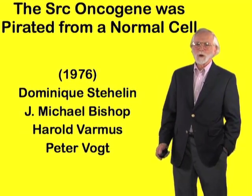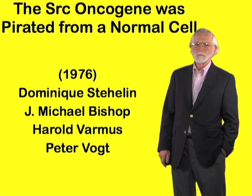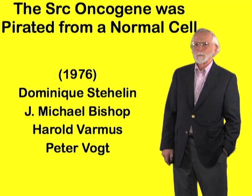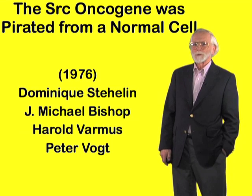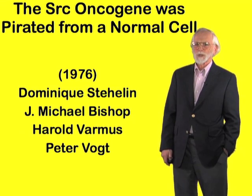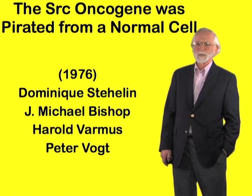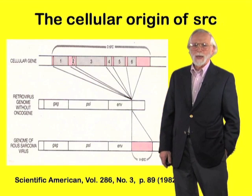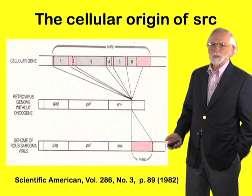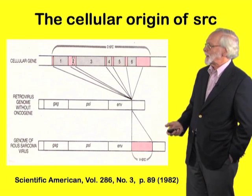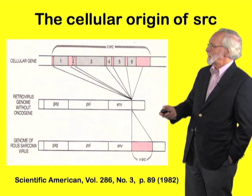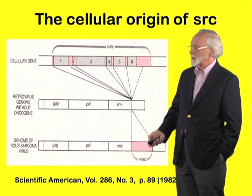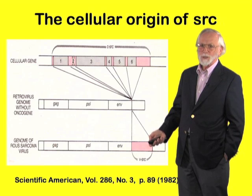The seeming irrelevance of SARC to the welfare of Rous's sarcoma virus inspired our research group in San Francisco to ask whether this gene might actually be acquired from a normal cell — that it is an accident of nature. That proved to be the case. At some time in the past, during the course of replication, the virus that became Rous's sarcoma virus acquired a cellular gene and inserted it into its own genome, creating the viral oncogene SARC.